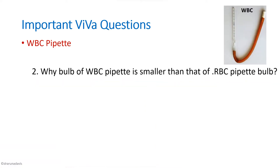The next question that can be asked is: why is the bulb of the WBC pipette smaller than the RBC pipette? The count of RBCs is in millions whereas for WBC it is in thousands. Naturally, in order to count RBCs, we have to dilute it more — that is why the RBC pipette has a larger bulb so that we can dilute it 200 times. For WBC, the bulb is small because we only have to dilute it 20 times.